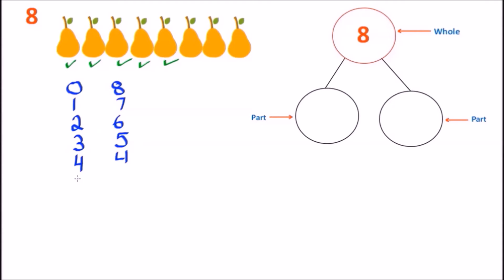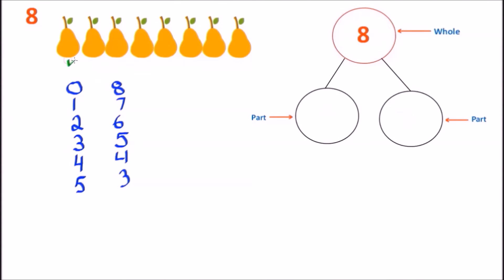Let's keep counting: 1, 2, 3, 4, and 5. So let's put down the number 5. How many more are remaining? 1, 2, and 3 — you have 3 pairs left, so that gives us a 3. Now you'll notice on top we had a 3 and a 5; now we have a 5 and a 3 — two different number bonds using the same numbers that give us the number 8.